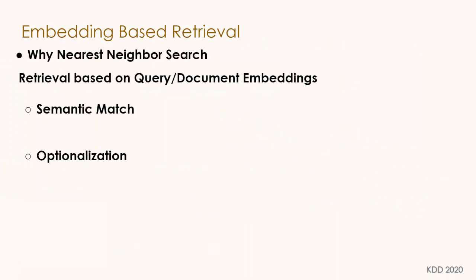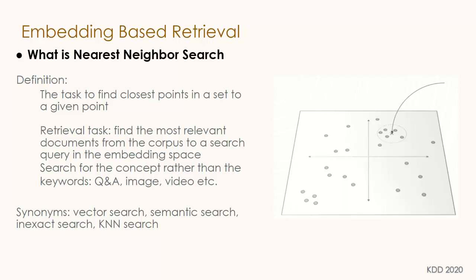We use nearest neighbor search because it performs retrieval based on query and document embeddings. It enables semantic matching and provides flexibility for handling term variants and spelling errors. Nearest neighbor search is a task to find the closest points to a given point in a set. In retrieval, it finds the most relevant documents from a corpus to a search query in embedding space, searching for concepts rather than keywords. It is typically used in QA systems, image and video search.